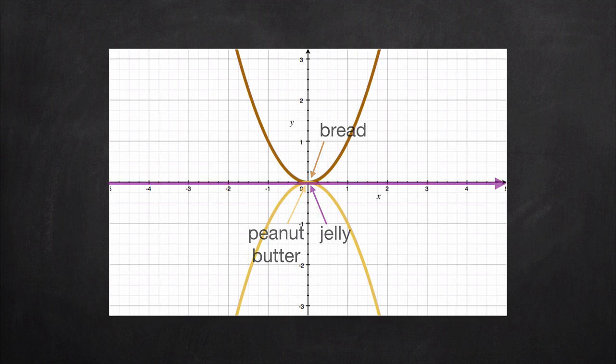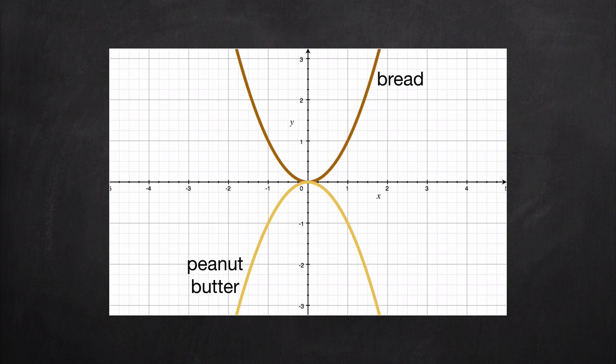Trying to be a little more precise, if we know that this is peanut butter and we know that this is bread, if jelly must always be greater than or equal to peanut butter, we know that jelly has to be above or at least right on top of peanut butter. But if jelly also has to be less than or equal to bread, then we know that jelly has to be below or right on top of the bread.